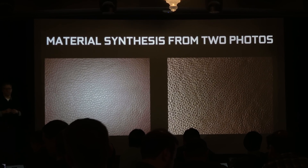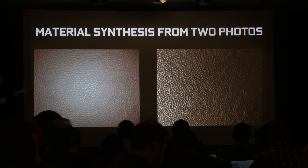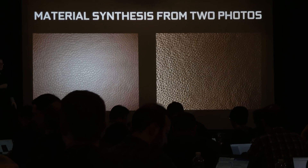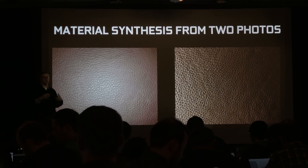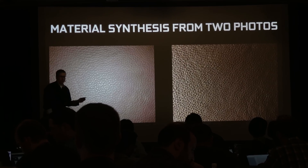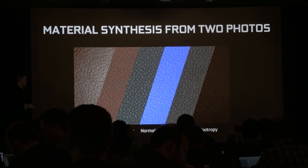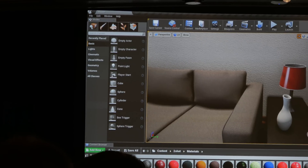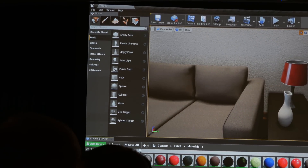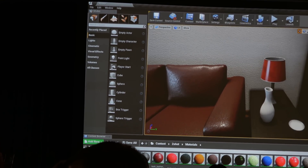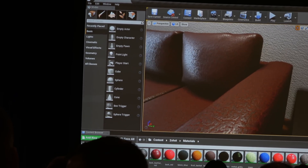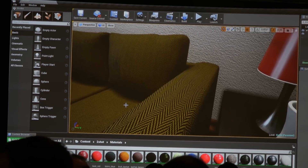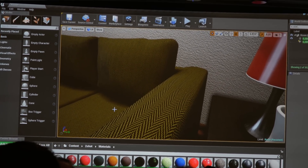My favorite thing from this entire thing was this new technology where you can take a couple of photos of a texture you want in your game — like leather, cloth, or patterns like tweed or houndstooth. You take two photos, one with a flash and one without, and throw it into the algorithm. It generates a material you can use right in your engine — like Unreal Engine. It generates the normals, speculars, glossy maps — pretty much everything you need to create a material. This is going to make things so much faster for game development.